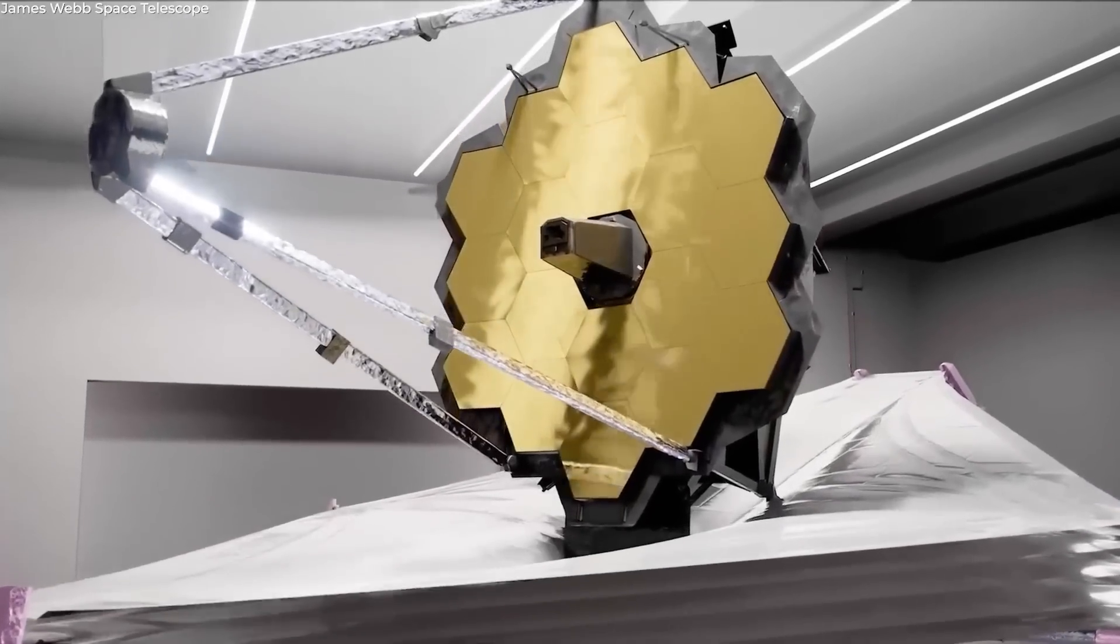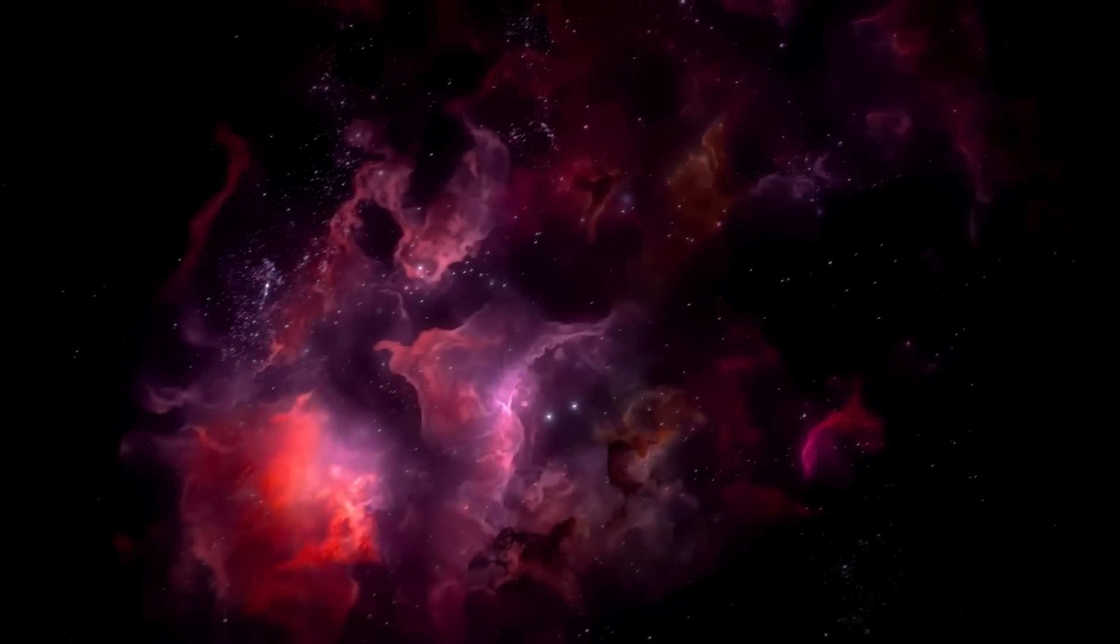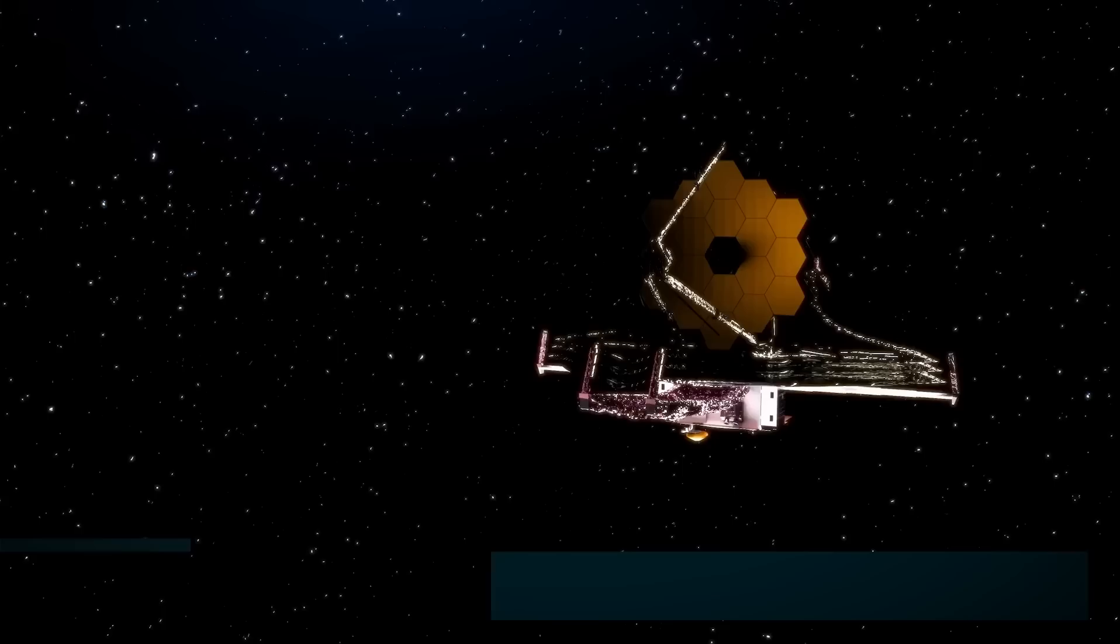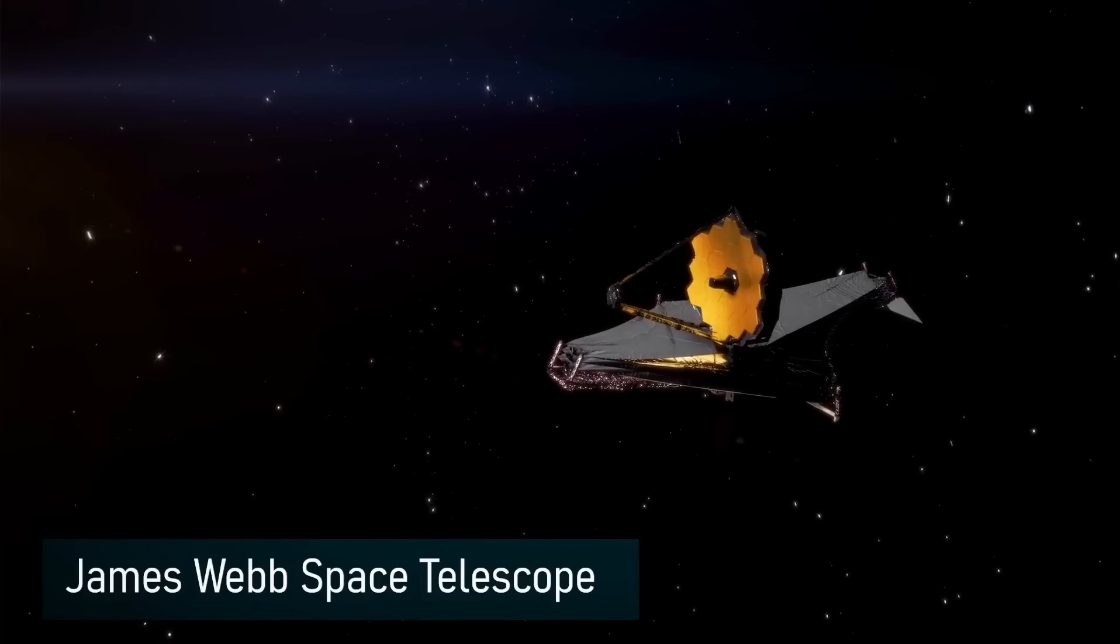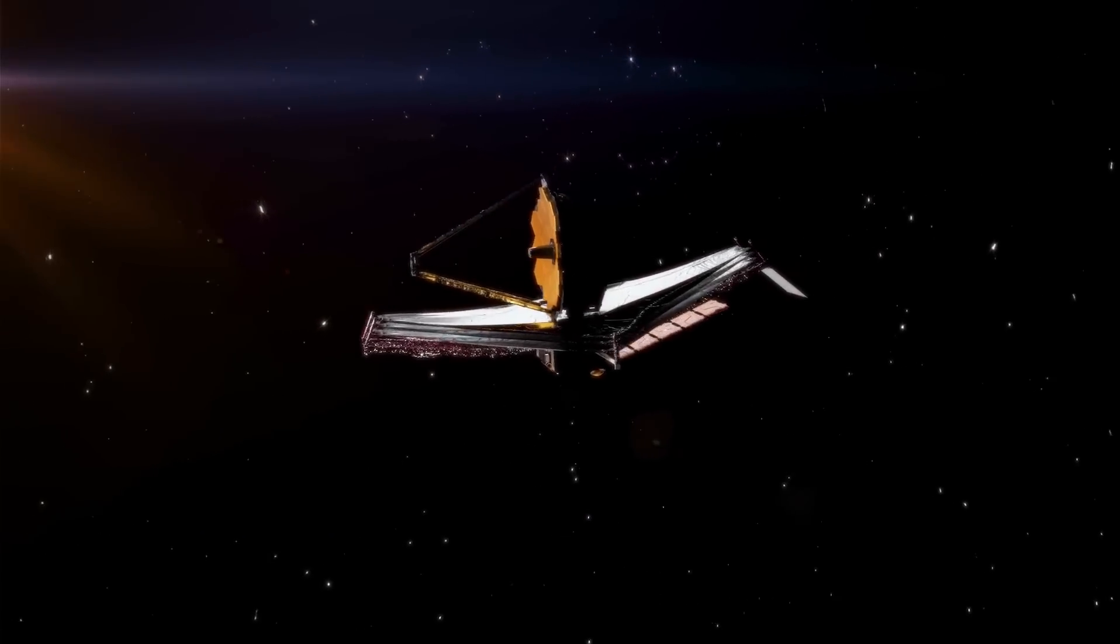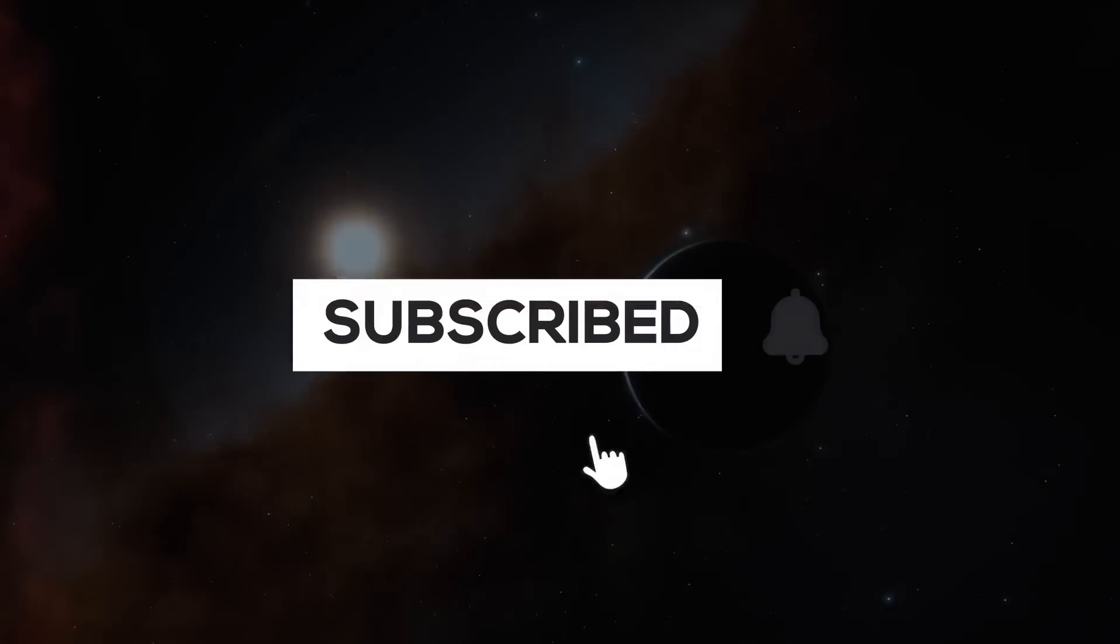In simple terms, the observable universe is just a small fraction of the entire universe that we can study and comprehend. While the complete size and shape of the entire universe are unknown, there is an estimated diameter of the observable universe which is around 93 billion light-years.